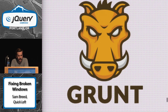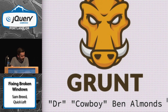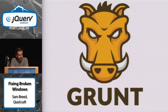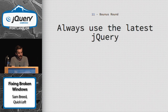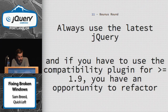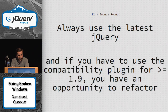Grunt is awesome — I hope everybody's using it. It's a great build tool and Node.js runs pretty much everywhere. Bonus round: always use the latest jQuery. If you're using the latest jQuery and you have the compatibility plugin, you have some stuff to refactor. If those refactorings come from a third-party plugin, hopefully it's open source so you can make a pull request to fix what's broken. The jQuery migrate/compatibility plugin is awesome — just run it with your console open and it will tell you everything that's wrong.